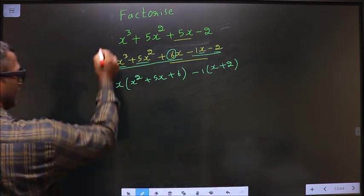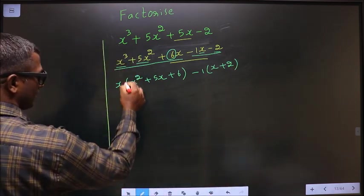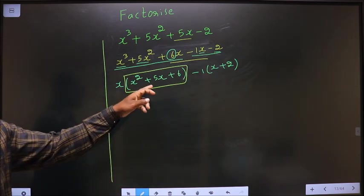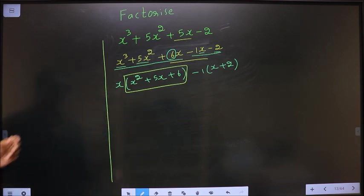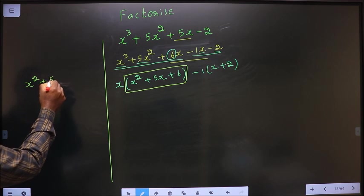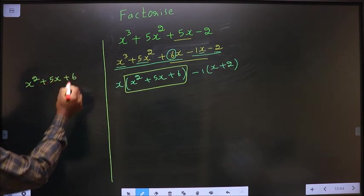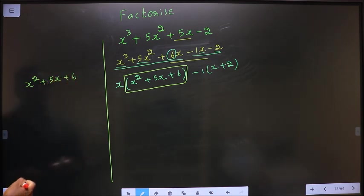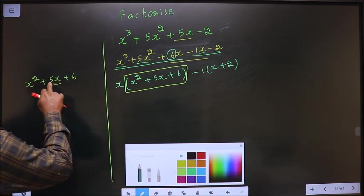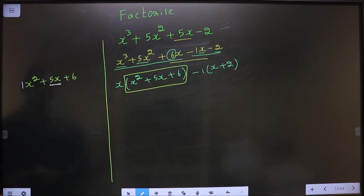Okay. Now, this is a quadratic. So let us factorize this quadratic equation here. So that is x square plus 5x plus 6. In order to factorize this, I have to change the middle term which is 5x. Here 1 into 6 is 6. When I add the 2 numbers, I should get 5. So the 2 numbers are 2 and 3.